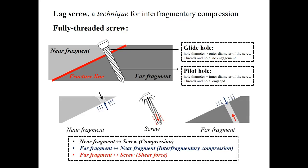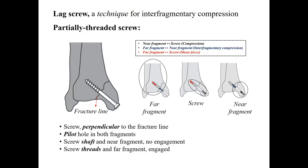After insertion of a lag screw, three pairs of forces are acting inside the system: the compression between the screw head and the near fragment, the interfragmentary compression between the near and far fragments, and the shearing force between the threads and the far fragment. For example, the near fragment is subjected to a downward load due to the pressure from the screw head, and an upward load due to contact with the far fragment. For a partially threaded screw, the lagging technique could be applied directly. A hole with the same diameter as the inner diameter of the screw is drilled in both fragments. Since the screw inside the near fragment does not have threads, the screw does not engage with the bone in this part, and the threads are only located in the far fragment. The pair of forces acting on the partially threaded screw are similar to those in the fully threaded lag screw.